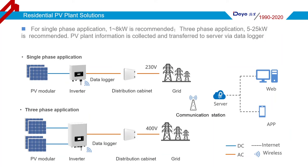As the system diagram shows, there is a datalogger under the inverter. The datalogger is used to connect the PV plant information and transport it to the server. Users can then view the plant information via website or app. There are 2 kinds of datalogger: Wi-Fi and GPRS.